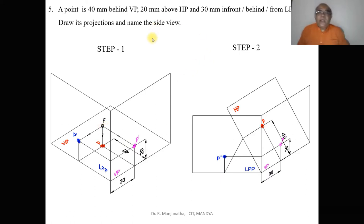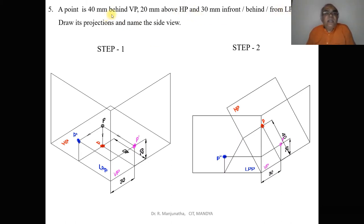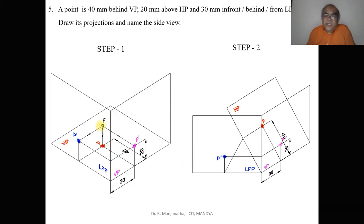Now, how to decide whether the point is 30 mm in front of or behind LPP. Since the condition given is behind VP, it should obviously be behind LPP. To decide this we need to satisfy the condition of the observer. When you see from the front view, the plane is between the object and the observer. When you look from the top view, the object is between the plane and the observer.